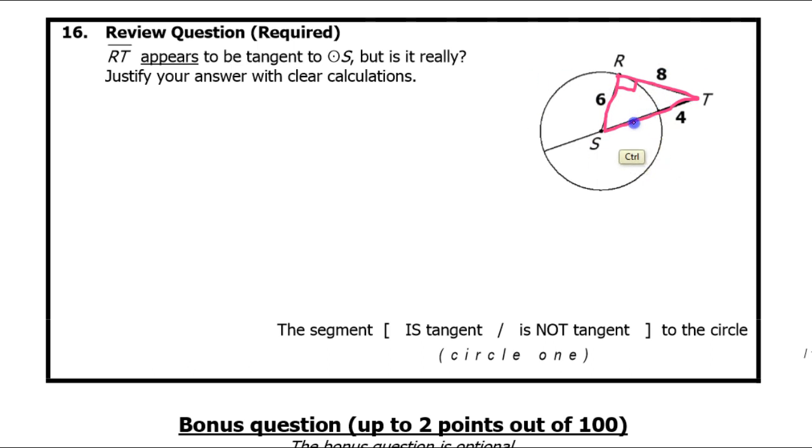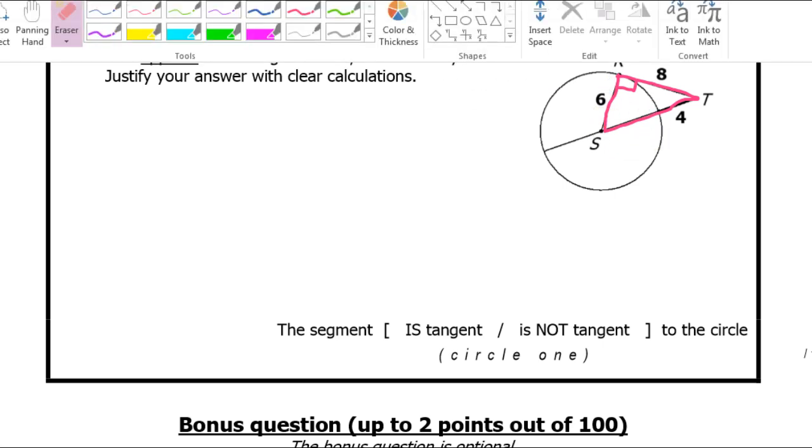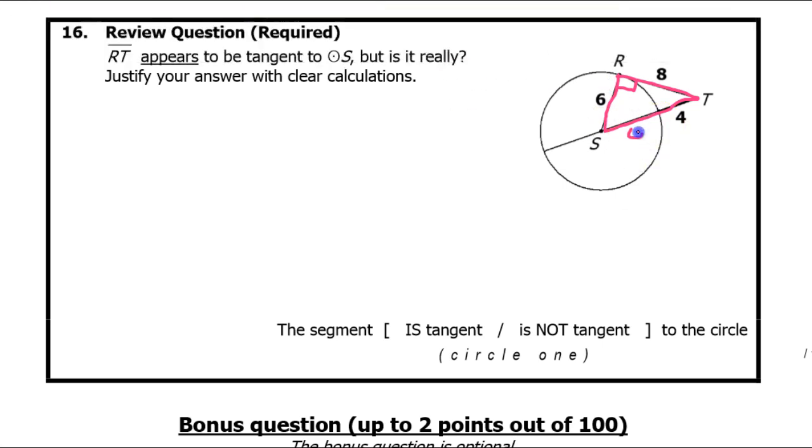But there's one other little thing that we need. We need to know the length of this little piece right here. Can you tell me what it is? Hopefully you were saying 6 just now, because the radius of the circle is clearly 6, and this little portion right here is another radius of the same circle. So of course, it will also be 6, which means that the would-be hypotenuse of this triangle is 10.